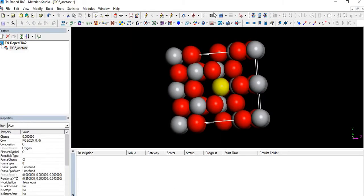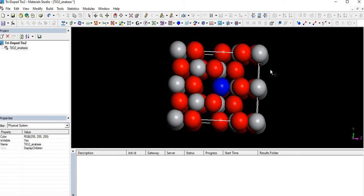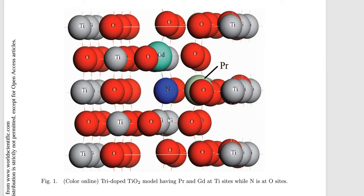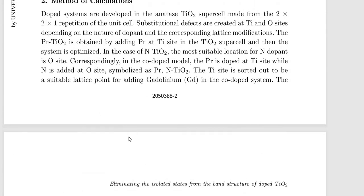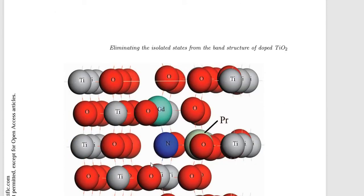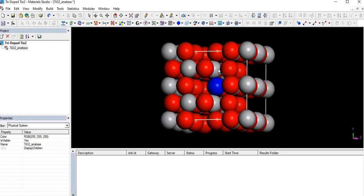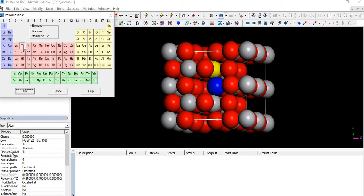So firstly we have to replace this with nitrogen atom. And then we have to replace the gadolinium atom with the titanium side, so click on this and select...